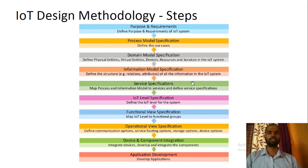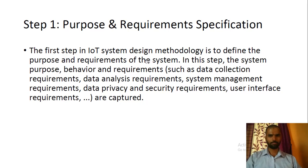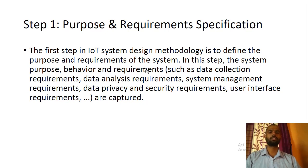This is the flowchart of the IoT Design Methodology. Let's see the first step that is Purpose and Requirement Specification. In this step the system purpose, behavior, and requirements are given — that means the actual purpose of the system, then its behavior, and the overall requirement for the particular system.